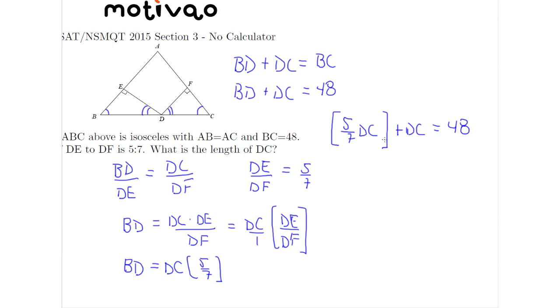So now what is 5 sevenths plus DC? Notice that there's a 1 here. So 5 over 7 plus 1 is just equivalent to 5 over 7 plus 7 over 7. So 5 plus 7 is 12. So we have that 12 over 7 DC equals 48. Therefore we multiply by the reciprocal on both sides and we get that DC is equal to 48 times 7 over 12. If you do the calculation you'll find that DC equals 28.